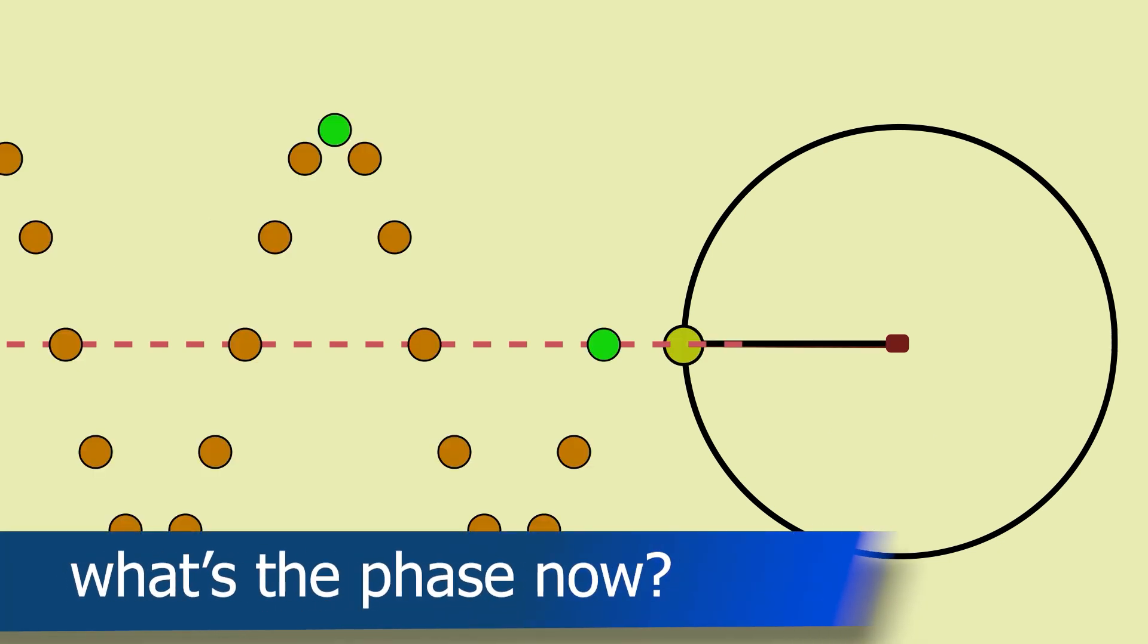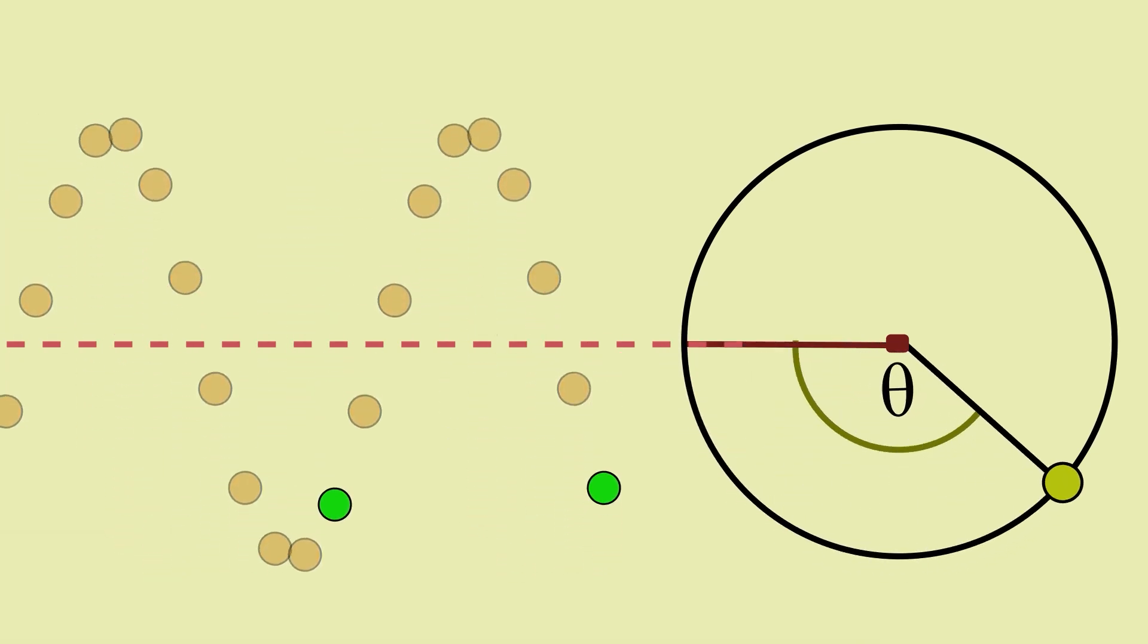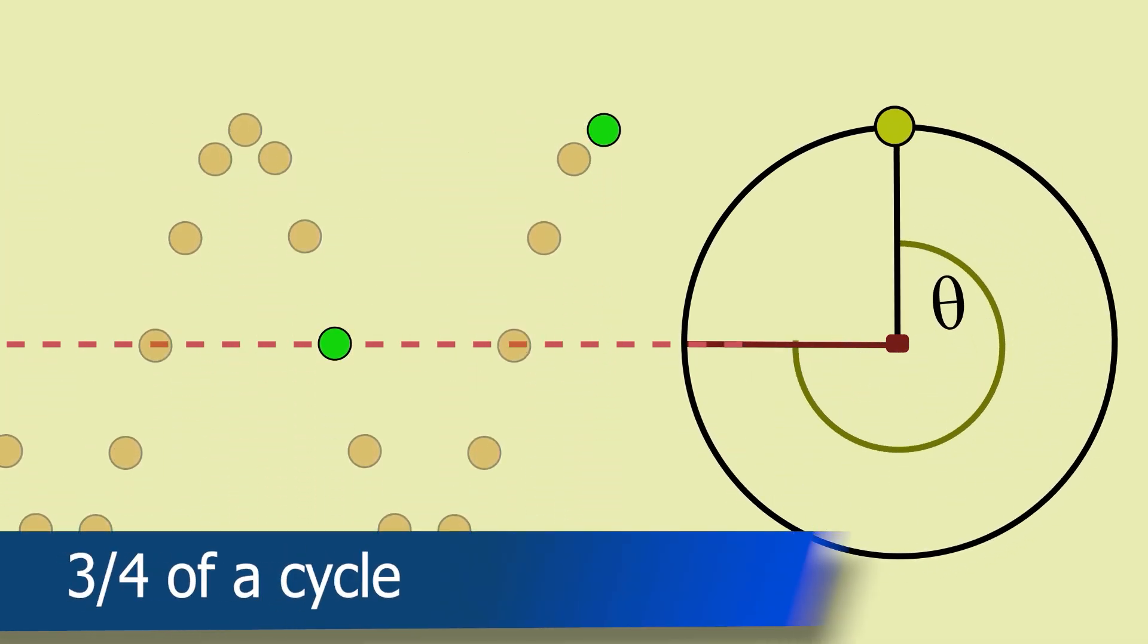To get the green point on the left to be where the green point on the right is you have to turn the circle through three quarters of a cycle. So 270 degrees or 3 pi over 2 radians.